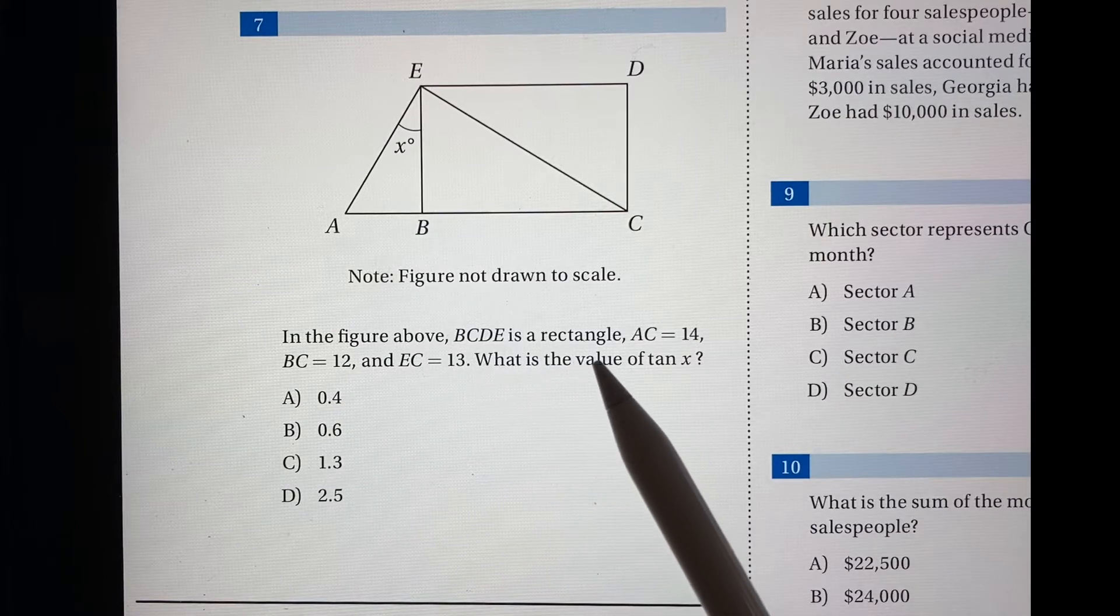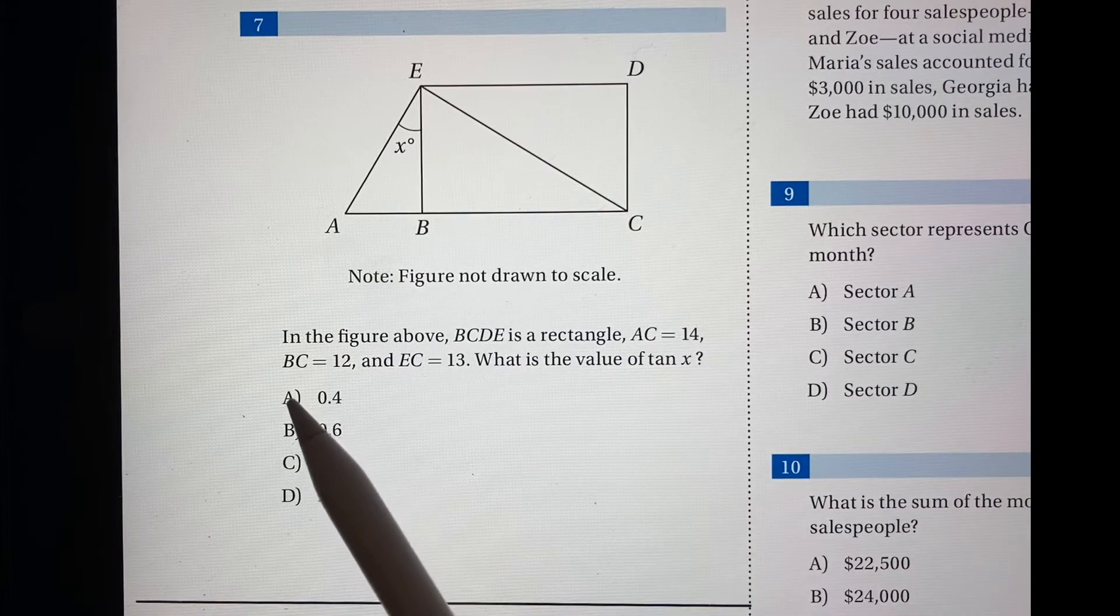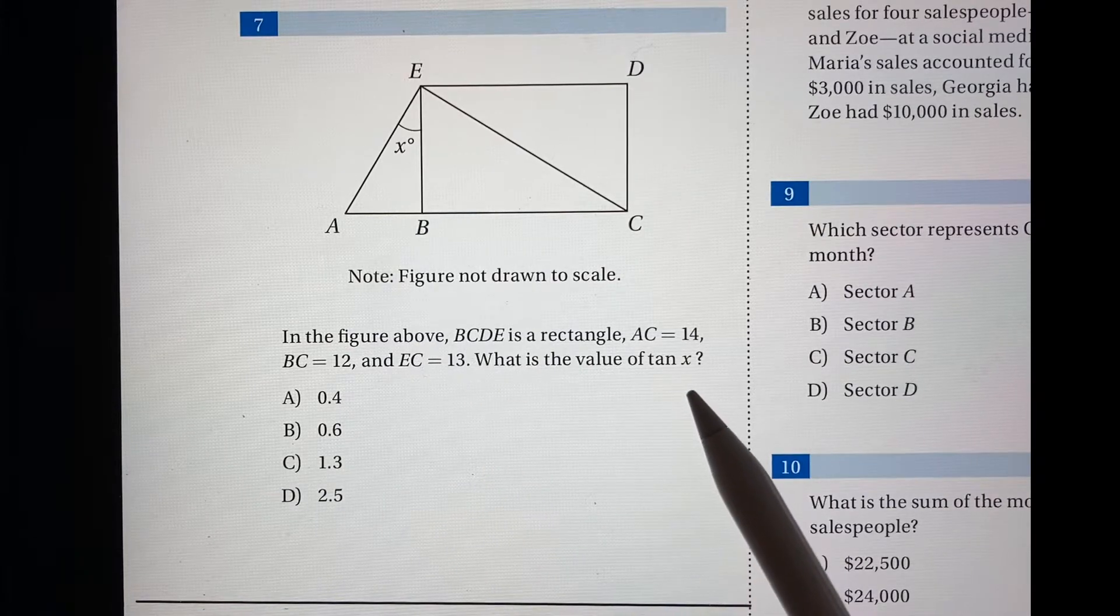In the figure above, BCDE is a rectangle. AC is equal to 14, BC equals 12, EC equals 13. What is the value of tan x?